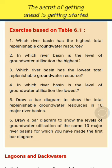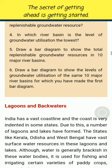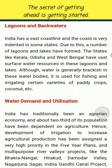Lagoons and Backwaters: India has a vast coastline and the coast is very indented in some states. Due to this, a number of lagoons and lakes have formed. The states like Kerala, Orissa and West Bengal have vast surface water resources in these lagoons and lakes. Although water is generally brackish in these water bodies, it is used for fishing and irrigating certain varieties of paddy crops, coconut, etc.